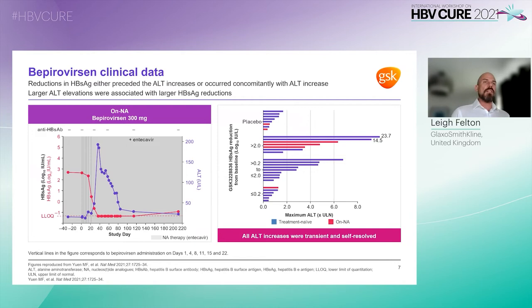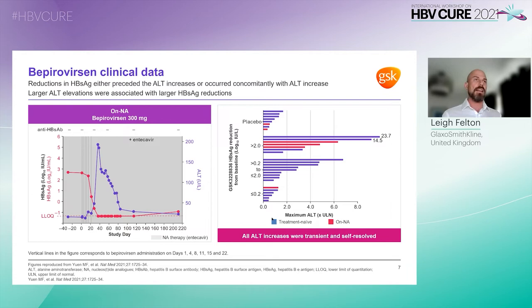In contrast to other GalNAc conjugated ASOs and siRNAs, reductions in S antigen in patients dosed for up to four weeks with 300 milligrams of bepirovirsen were followed by self-resolving ALT elevations. An example of the temporal relationship between S antigen suppression and ALT is shown here for a single participant on stable nuke therapy, dosed for up to four weeks with 300 milligrams of bepirovirsen.